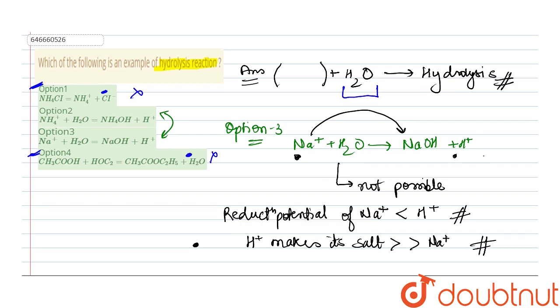And if we see this reaction option number two, NH4+ plus H2O gives NH4OH plus H+, then this reaction is possible, feasible, and this satisfies the condition of hydrolysis too. Hence this option two is the correct reaction for hydrolysis and that is our answer.